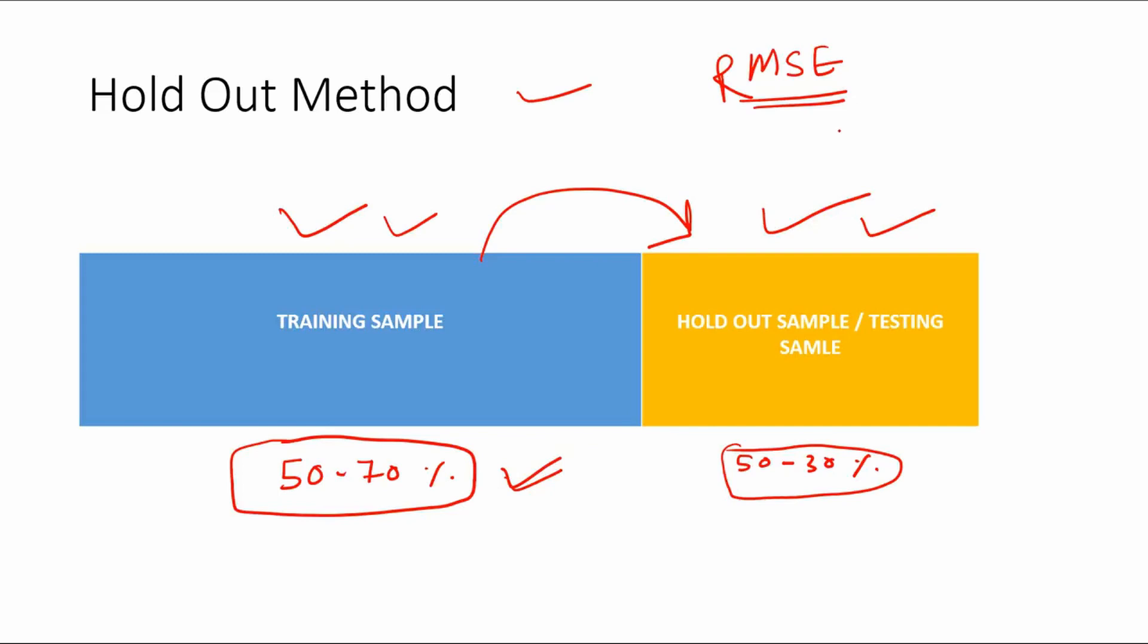One disadvantage of using holdout method is that it is prone to sample bias because you do not actually decide which observations are going to be in the training sample and which observations are going to be in the holdout sample. You do it randomly. You do a random sampling in finding out which data point is going to be the training sample and which data point is going to be in the holdout sample.